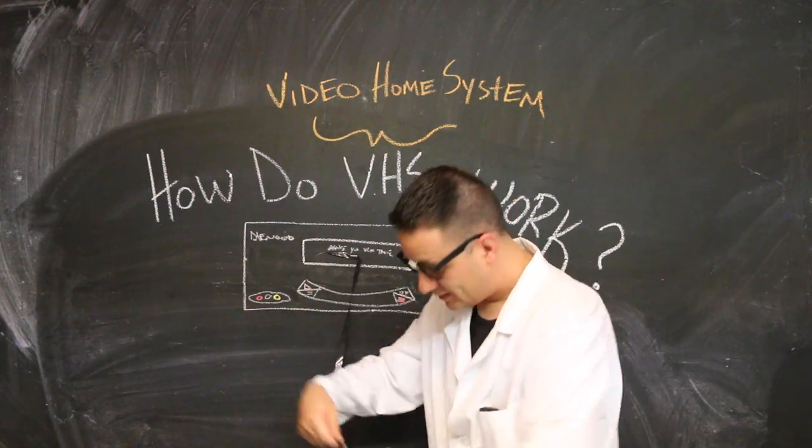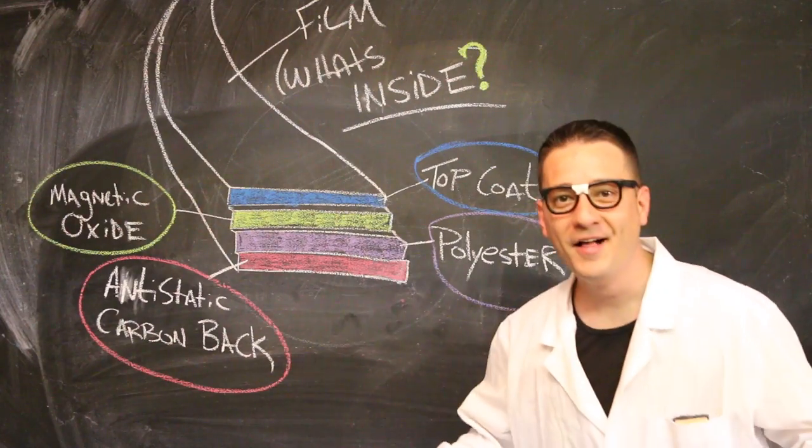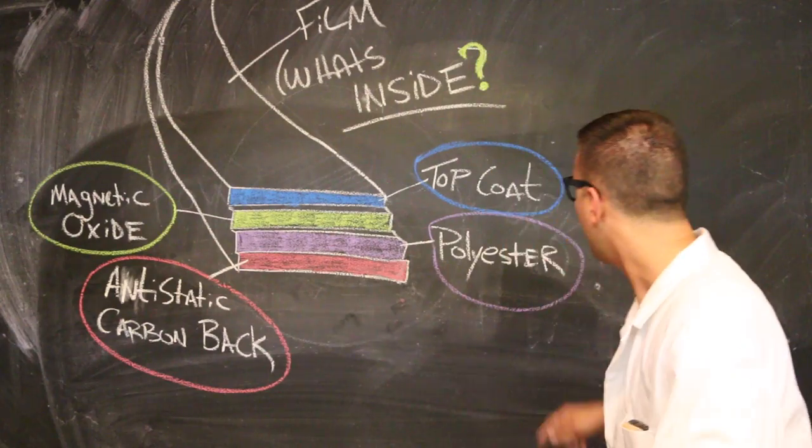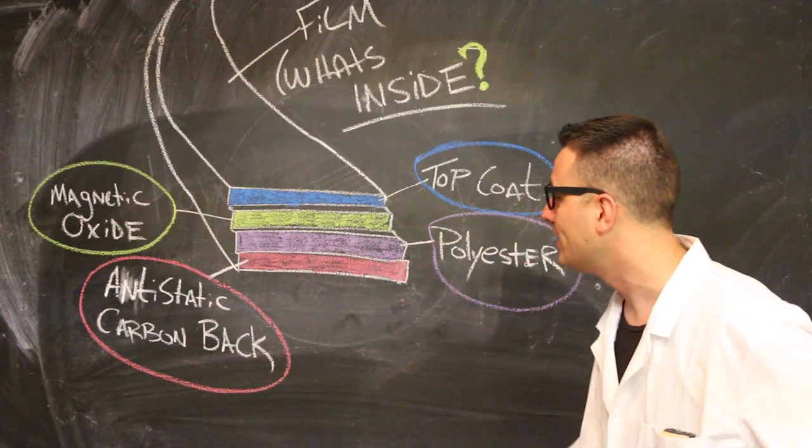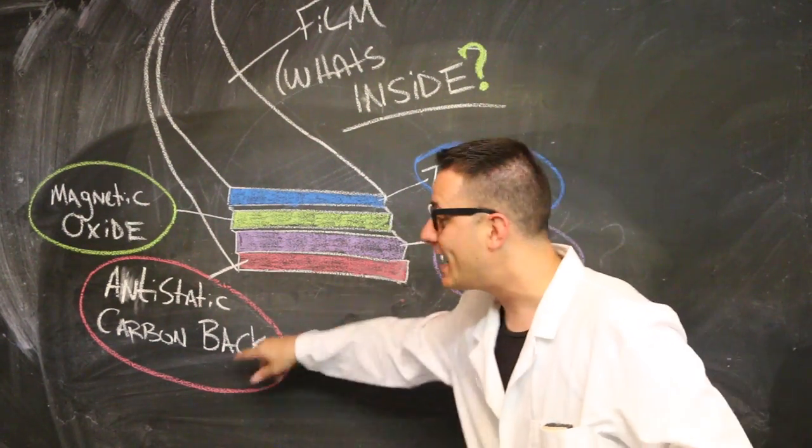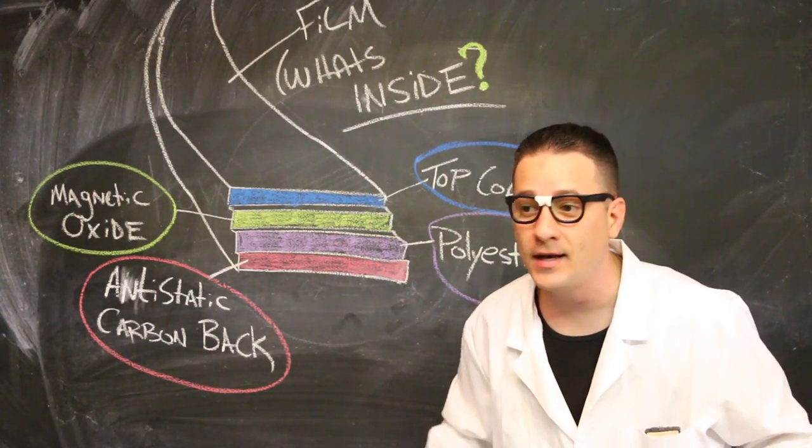Now that I'm untangled, let's talk about this tape, the film, what's inside? Well there are four things that make it up. A top coat to protect everything, a magnetic oxide, that's the trick, a polyester, and an anti-static carbon back.